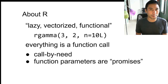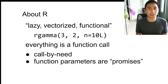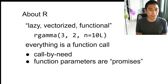About R as a programming language: it's designed to be somewhat difficult to reason about. It's lazy, vectorized, and functional. For example, the function `rgamma` has parameters like 3, 2, and 10 that are only evaluated lazily inside the function and come with an environment. Everything is a function call — even `if` is a function call. Parameters are promises: some code paired with an environment. This is called call-by-need.